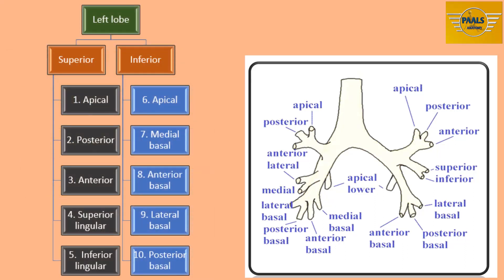For the left lung, there are two lobes. The superior lobe has five segments: apical, posterior, anterior, superior lingular, and inferior lingular. The inferior lobes are the same for both the right and left lungs: superior (apical), medial basal, anterior basal, lateral basal, and posterior basal. These make up the ten bronchopulmonary segments for each of the lobes of the lungs.